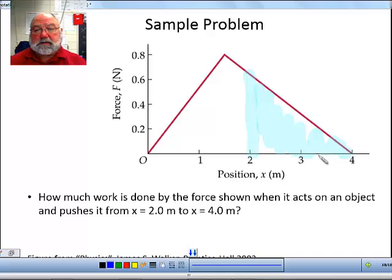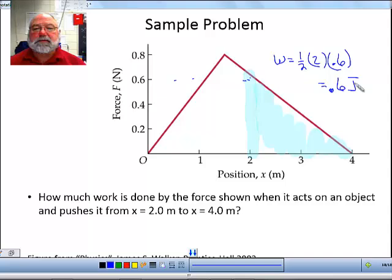Okay, so this is a triangle. The area of a triangle is one half the base times the height. So the work is going to equal one half the base, which is two meters, times the height, which is 0.6 meters. And that's equal to 0.6 joules. 0.6 joules of work are done pushing the object from two to four meters.